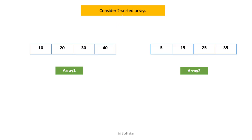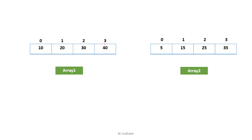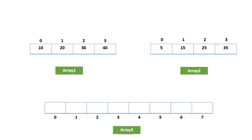Consider the input arrays. Array 1 contains 10, 20, 30 and 40. Array 2 contains 5, 15, 25 and 35. Array 1 size is 4, array 2 size is 4. If we combine these two, the resultant array contains totally 8 elements. To store these 8 elements we need another array called array 3. Array 1 is indexed from 0 to 3, array 2 is also indexed 0 to 3, and array 3 is indexed from 0 to 7.